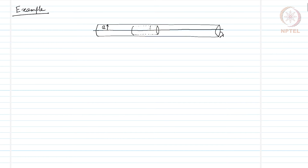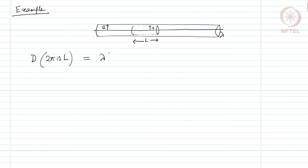We can infer that the electric displacement vector will be radially outward, and it will be symmetric because there is uniform charge density lambda on this line. Therefore, we can draw a cylindrical Gaussian surface with radius s and length L. On this Gaussian surface, the displacement vector integrated over the surface gives D times 2 pi s times L, which equals the total charge enclosed lambda times L. Therefore, D can be expressed as lambda over 2 pi s in the s-hat direction.